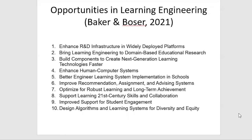Number six: improve recommendation, assignment, and advising systems. Those of you who have had to choose what classes to take in college have probably noticed that the advising we give students isn't all that great a lot of the time — we can use data to improve it. Number seven: optimize for robust learning and long-term achievement. It's really easy to test short-term learning gains; it's really hard to test longer-term impacts. This is really key.